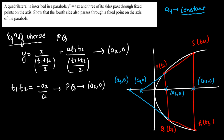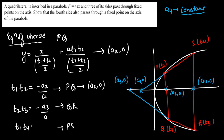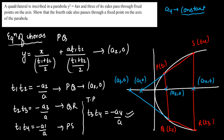In the same way, for chord QR connecting t2 and t3, we get t2·t3 = -a3/a. For chord PS connecting t1 and t4, we get t1·t4 = -a1/a. One more chord remains to be proved — that is RS, made of t3 and t4, so t3·t4 = -a4/a. We need to prove that a4 is a constant.